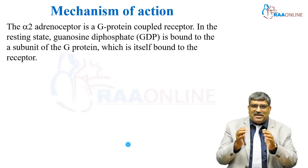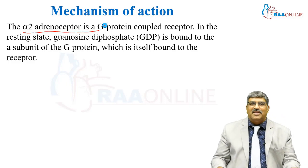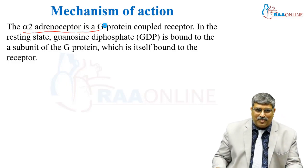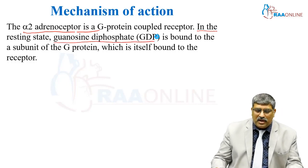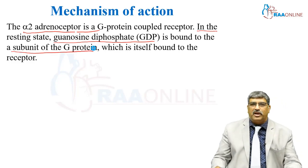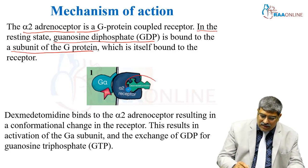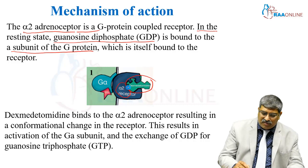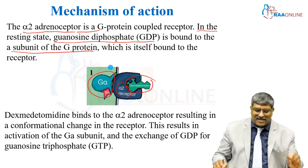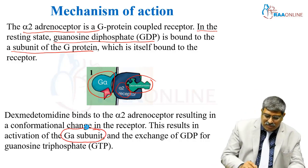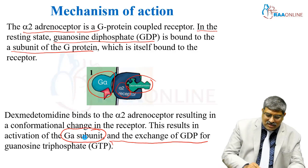Coming to the cellular level action of dexmedetomidine: the alpha-2 adrenoreceptor is a G protein-coupled receptor. Normally in the resting state, GDP (guanosine diphosphate) is bound to the alpha subunit of the G protein, which is itself bound to the receptor. Once you give dexmedetomidine, it binds to the alpha-2 receptor, causing a conformational change in the G protein. This results in activation of the alpha subunit and the exchange of GDP to GTP.